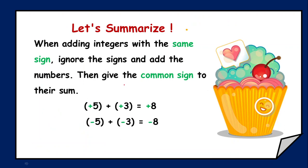Now let's summarize what we learned. Whenever we are adding two numbers with the same sign, we need to ignore the sign and simply add the numbers. For example, plus 5 and plus 3 — both are positive, so simply add: 5 plus 3 is 8. Then give the common sign, which is positive — so the answer is plus 8. Now for minus 5 and minus 3 — both have the common sign, minus. Add the numbers: 5 plus 3 is 8, and the common sign is minus, so the answer is minus 8.